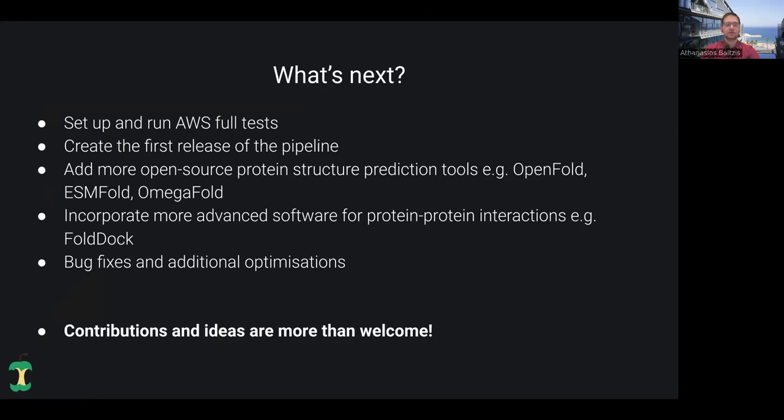We are now at this point that we have to set up and run the AWS full tests in order to create the first release of the pipeline. In future releases, we are planning to add more open source protein structure prediction tools such as OpenFold or even a newer generation of prediction tools such as ESMFold or OmegaFold that use protein language models. For this reason, they are more or less an order of magnitude faster than AlphaFold and ColabFold, but without losing accuracy. In fact, they have the same levels or even better levels of accuracy.